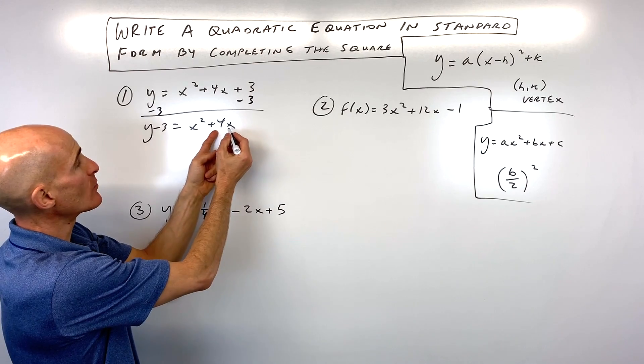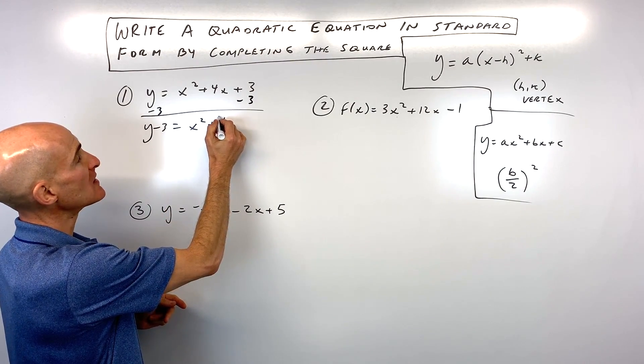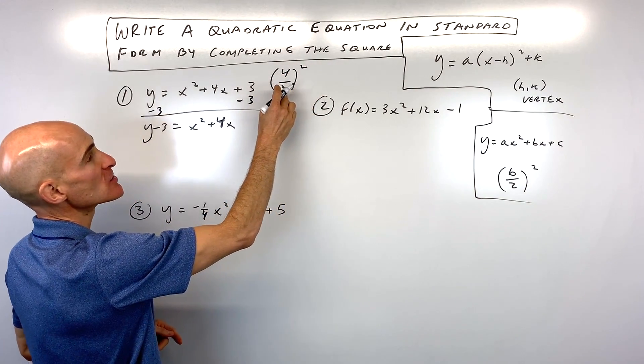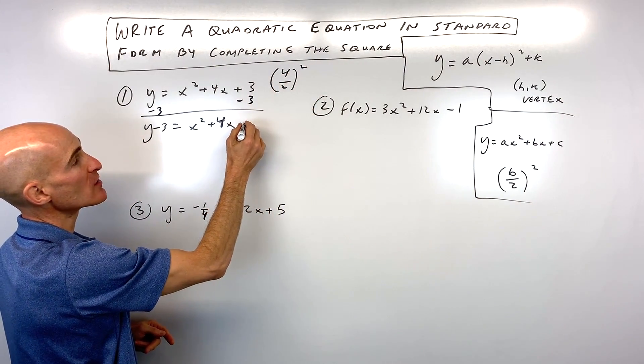So in this case, you can see the number in front of the x is 4. We take half of 4. You can do that work on the side if you want. 4 divided by 2 squared. So 4 divided by 2 is 2. 2 squared is 4.